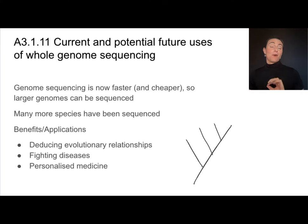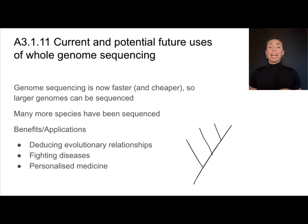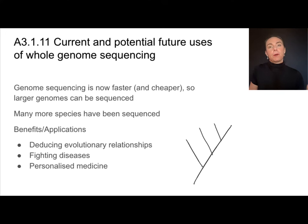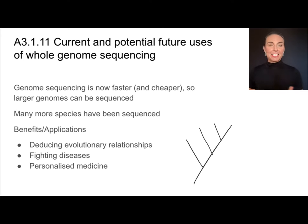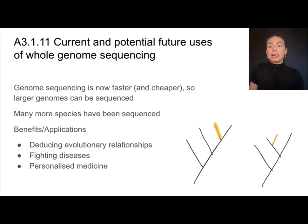Genome sequencing is now a lot faster and a lot cheaper than it was when that technology first came out, which means we can sequence the genomes of many more different organisms than we could before. There are some really cool applications here. We've seen cladograms or evolutionary trees, and we put those together based on evolutionary relationships. Sometimes if we can't sequence something's DNA we're making guesses about that relationship, and once we do sequence it, sometimes it causes us to change our mind and rethink how things are classified and how they evolved.